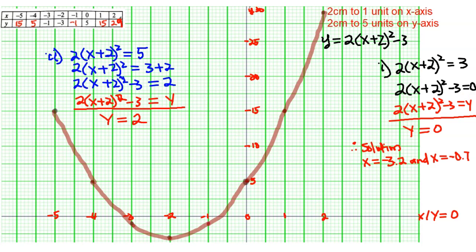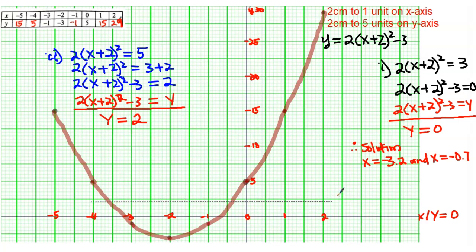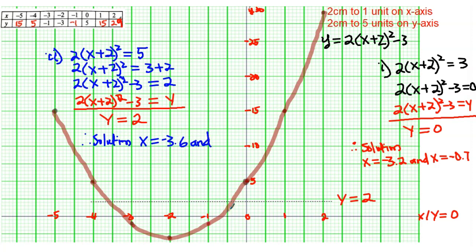Grab your ruler and draw the horizontal line y = 2 on the graph. Remember on the y-axis every 2 small boxes represents 1 unit, so 4 small boxes is 2. Draw that line at y = 2, then trace down to the x-axis to find the values. The solutions are x ≈ -3.6 and x ≈ -0.4. The examiner will give you a range because it's freehand.